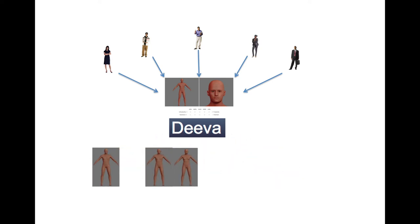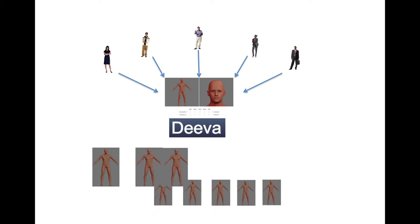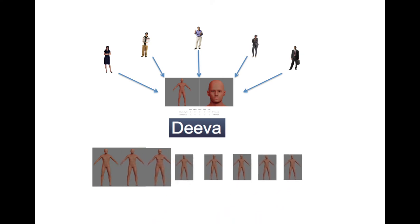The search results will improve as the number of votes increases. D.Va uses evolutionary genetic algorithms to continuously refine the quality of its retrieval results. In fact, D.Va stands for Depot of Evolving Avatars.